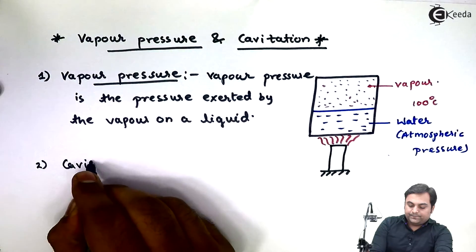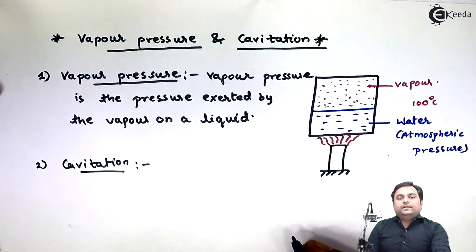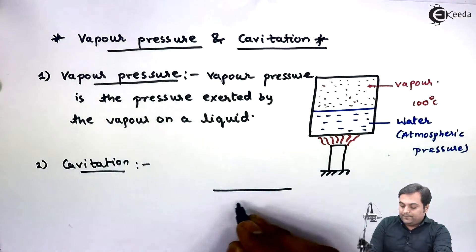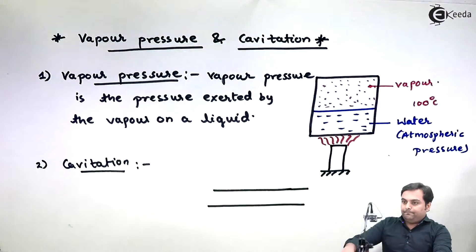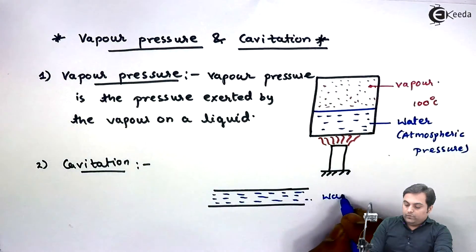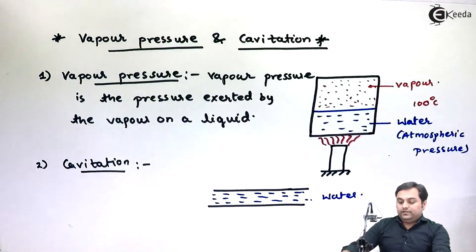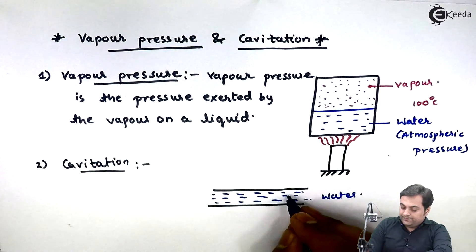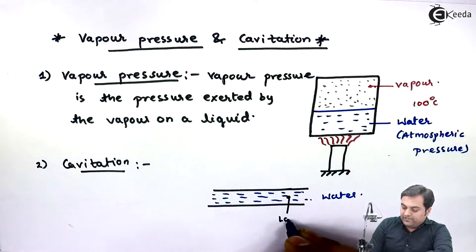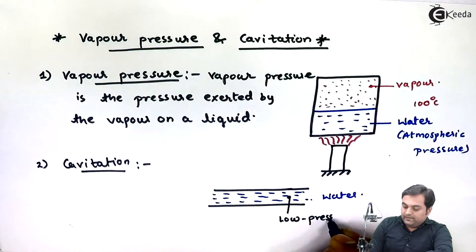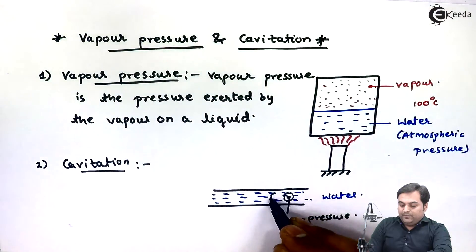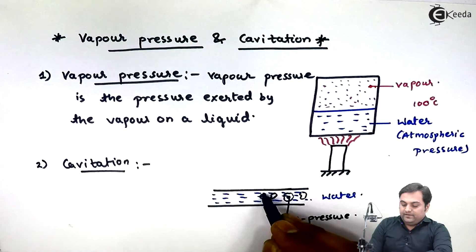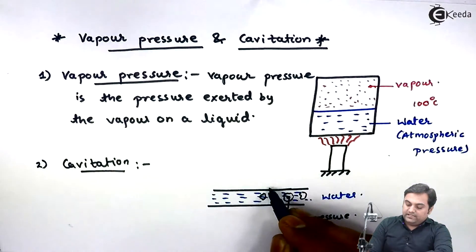Now let us see what is meant by cavitation. If we have a pipeline and water is flowing through it, suppose we have a low pressure region at some location. Because of that low pressure, the water would be converted into vapor — that is, air bubbles would be formed in the low pressure region.